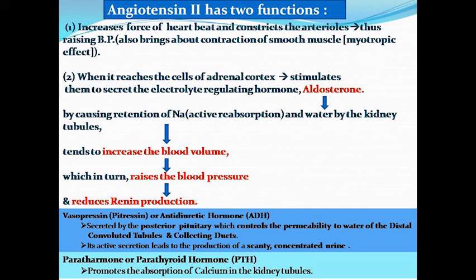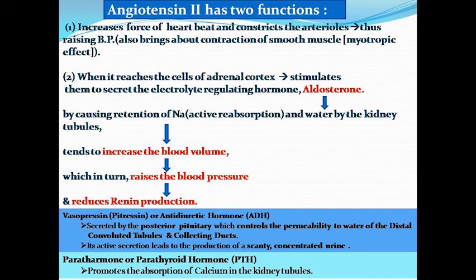Angiotensin-2 causes contraction of smooth muscles, which we call the myotropic effect. Secondly, when it reaches the adrenal cortex cells, it stimulates them to secrete the electrolyte-regulating hormone aldosterone. Aldosterone causes retention of sodium and active reabsorption of water in kidney tubules, thereby increasing blood volume. As blood pressure increases, the renin production decreases, because renin production occurs when blood pressure decreases. These are all the processes we will explain in the next slide.